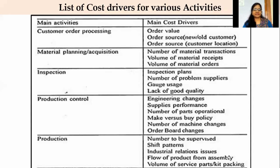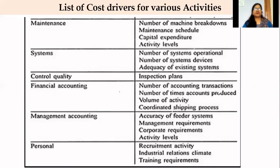For production activity, cost drivers are number to be supervised, shift patterns, industrial relation issues, flow of product from assembly, volume of service parts, and kit package. For maintenance, cost drivers include number of machine breakdowns, machine schedule, maintenance schedule, capital expenditure, and activity levels. For systems activity, cost drivers are number of systems operational, number of system devices, and adequacy of existing systems.